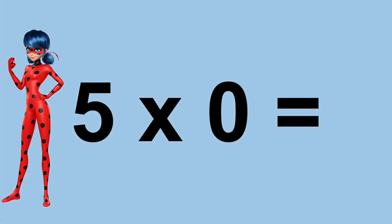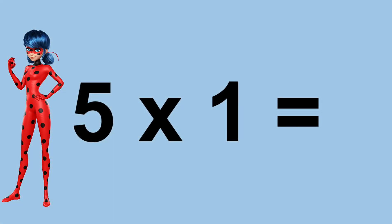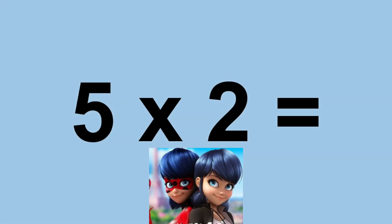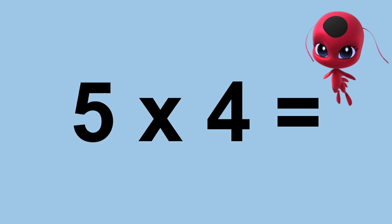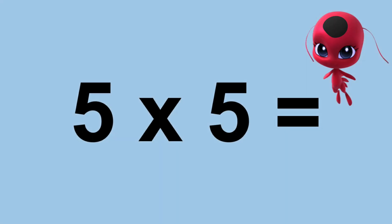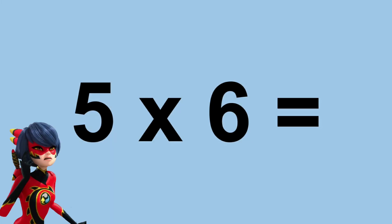Five times zero equals zero. Five times one equals five. Five times two equals ten. Five times three equals fifteen. Five times four equals twenty. Five times five equals twenty-five. Five times six equals thirty.